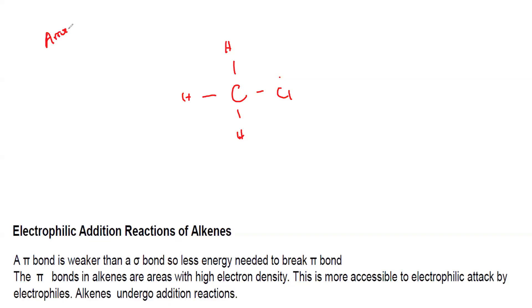The direction of the arrows — how we represent the direction of an arrow: carbon bonded with hydrogen, and then chlorine is there. Chlorine is more electronegative, so there will be a partial negative on chlorine and the carbon will be partial positive.